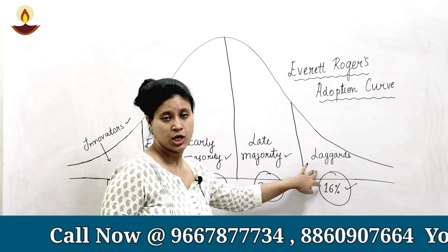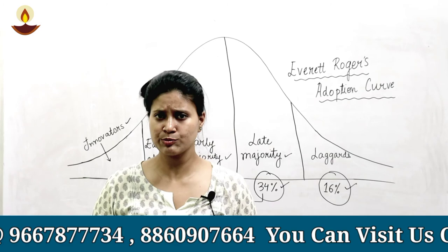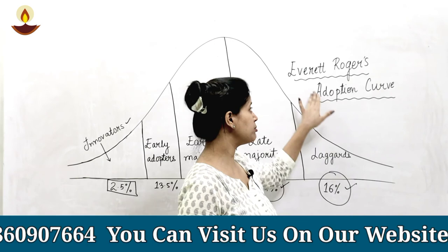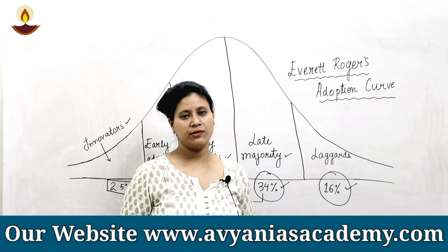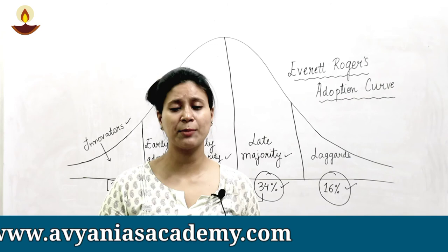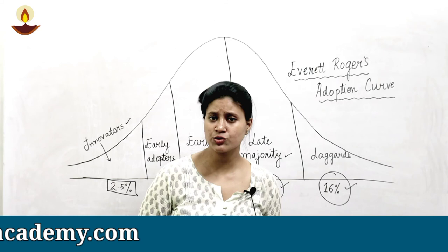This was all for this concept. This is a very small concept with very direct questions. I hope you also learned the name of the person — Everett Rogers — which may be asked under the match-the-following, where you have to remember 'adoption curve' or 'Bell curve.' I hope you liked the video. Do like and subscribe to the channel. If you have any queries, you can ask us. Keep learning, keep growing, and keep following Avyan IAS Academy.